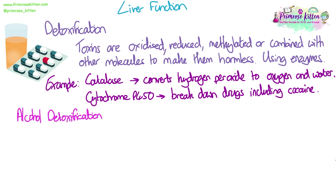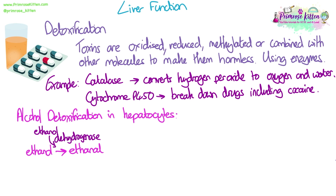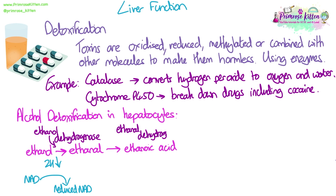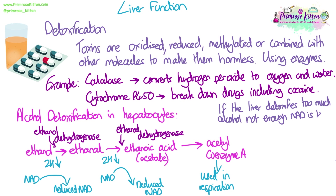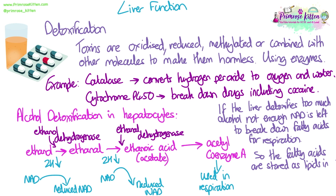Let's look at alcohol detoxification as an example. First, ethanol is converted into ethanal by the enzyme ethanol dehydrogenase — hydrogen ions are removed and used to produce reduced NAD, a coenzyme. The ethanal is then converted to ethanoic acid (acetate) by ethanol dehydrogenase, again removing two hydrogens to produce another reduced NAD. The ethanoic acid is then added to coenzyme A to produce acetyl-CoA, which can be used in respiration. If the liver detoxifies too much alcohol, not enough NAD remains to break down fatty acids for respiration. These fatty acids are then stored as lipids in the hepatocytes, and this is how fatty liver disease develops after long-term heavy alcohol consumption.